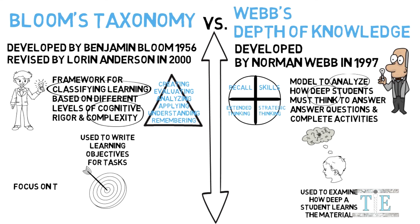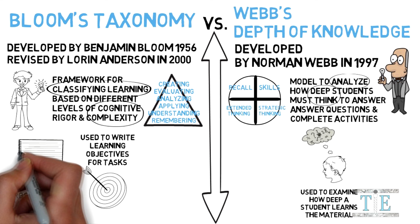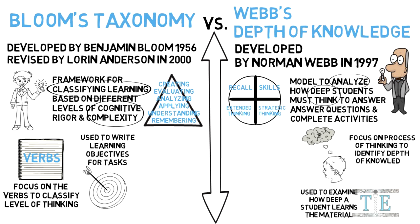Bloom's Taxonomy specifically focuses on verbs to classify levels of thinking. The taxonomy offers verb tables that correlate with various levels of the taxonomy. Webb's does not focus on verbs, but rather focuses on the process of thinking. With Webb's, teachers should look to identify the type of thinking going on inside the student's head.